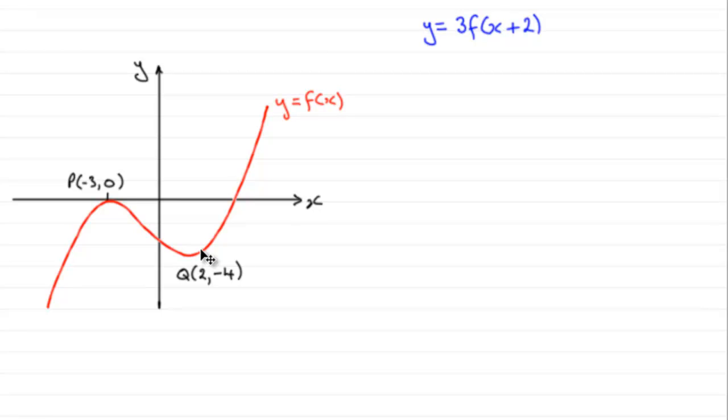And this point here is of special interest because since it's at 2 minus 4 at the moment, if you slide the graph two units to the left, it's going to end up being on the y axis. So you're going to get something like this if we just slide that across.